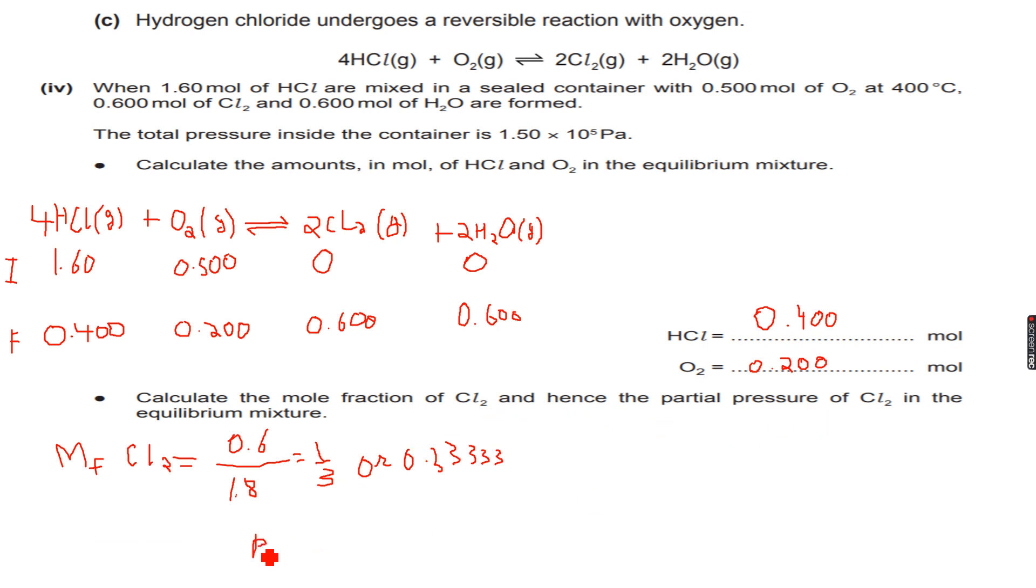So pCl2, which is the partial pressure of Cl2, is equal to the mole fraction of Cl2 into the total pressure. The total pressure is given as 1.5 into 10 to the power of 5, so this is the partial pressure of Cl2 and this will be 50,000, or 5.0 into 10 to the power of 4, or 50,000 Pascals. This will be the partial pressure of Cl2, and we have done this as well. Let's move forward.